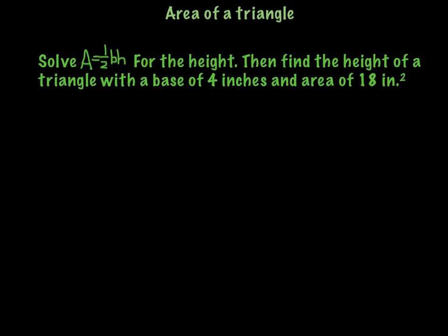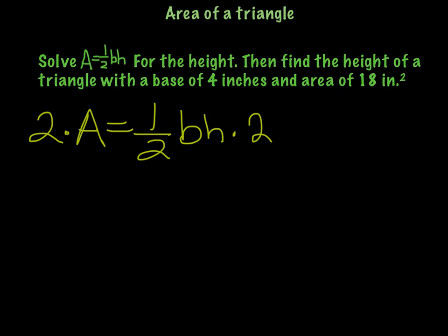For our first example, we're going to use the formula for the area of a triangle. We're going to solve A = ½bh for the height, then find the height of a triangle with a base of 4 inches and an area of 18 square inches. We're going to take this literal equation with three different variables and first take care of that one-half. So if I have A = ½bh, to get rid of it we multiply both sides by 2. The multiplication property of equality says those will cancel out, so 2A = bh.